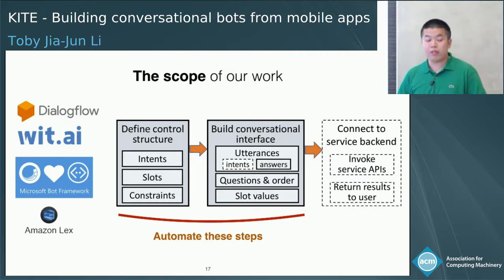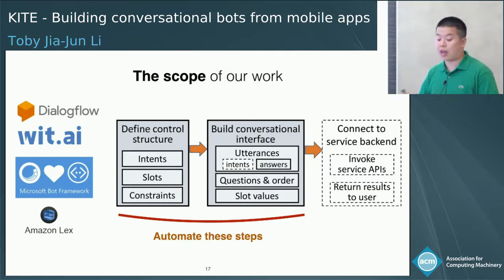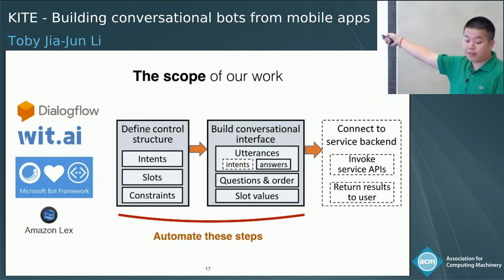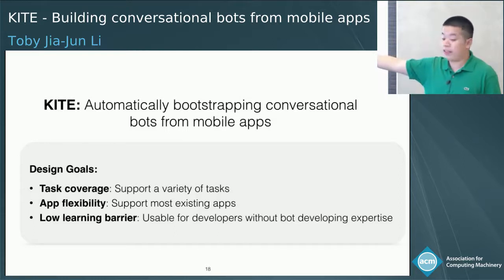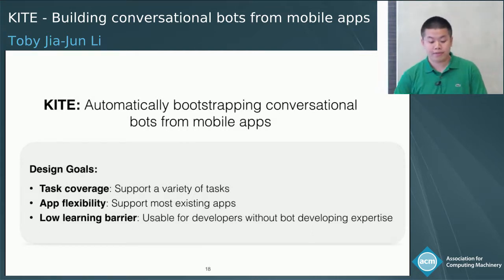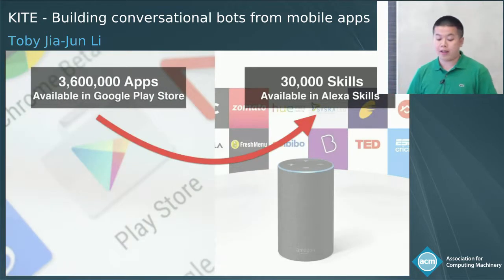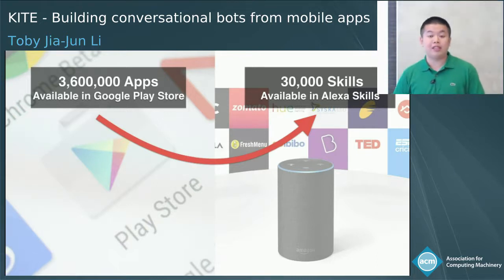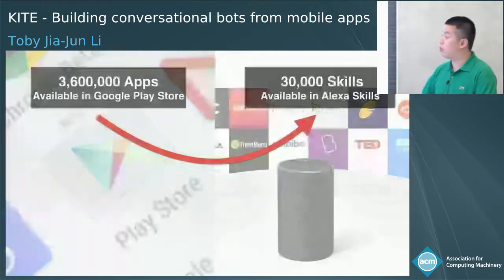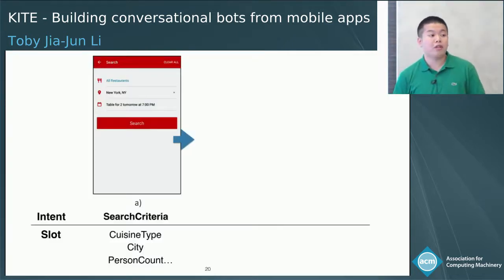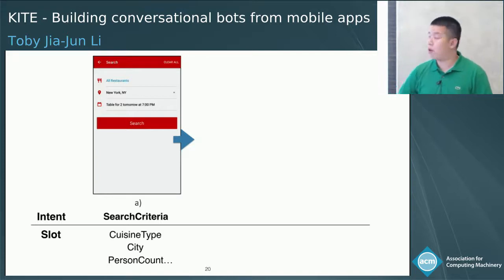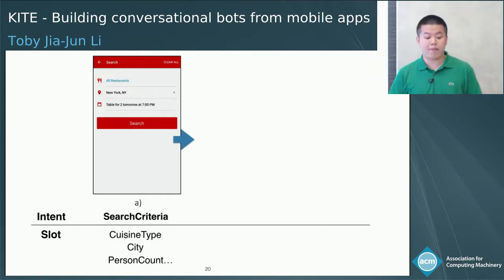In this work, our goal is to reduce developer efforts by automatically bootstrapping control structures and conversational interfaces in the bot development process. To achieve this, we designed and implemented a system named Kite. We have three major design goals: high task coverage, good app flexibility, and a low learning barrier. Nowadays, we have far more mobile apps than conversational bots available. Our key goal is to leverage existing apps for bootstrapping templates for conversational bots. Our high-level intuition is that the graphical interface of mobile apps encapsulates the task logic needed for building a bot, where we can identify intents and slots from interaction traces.